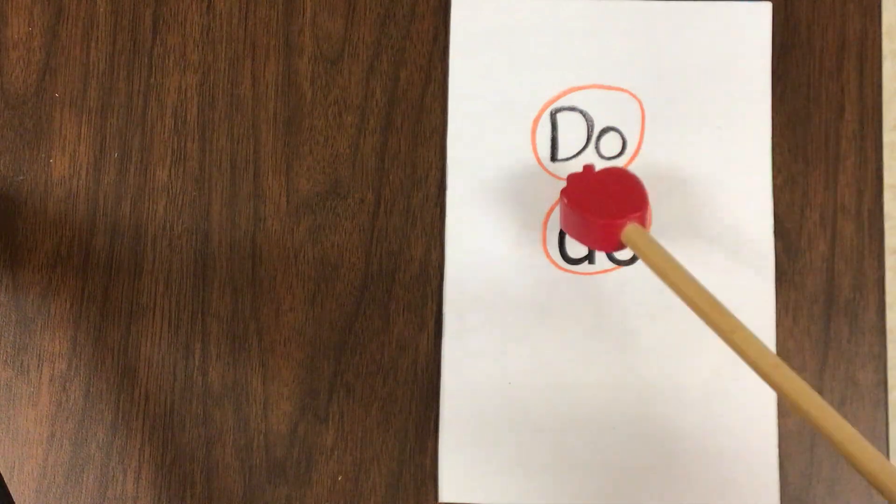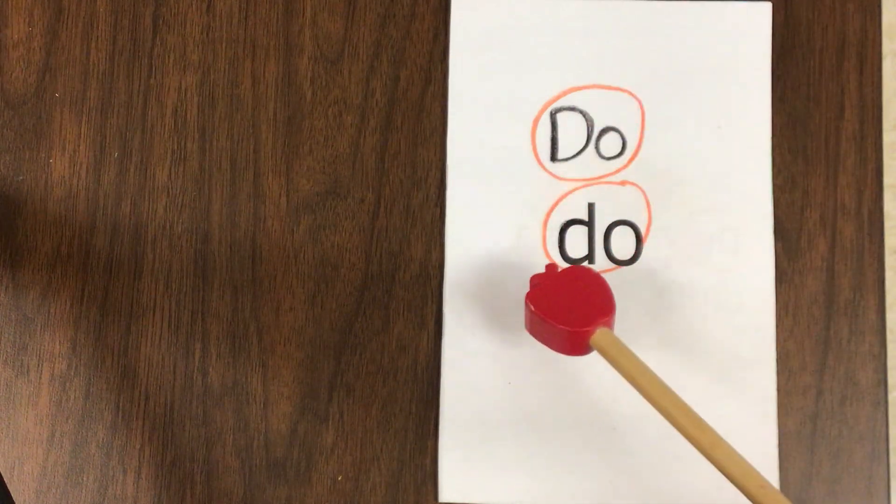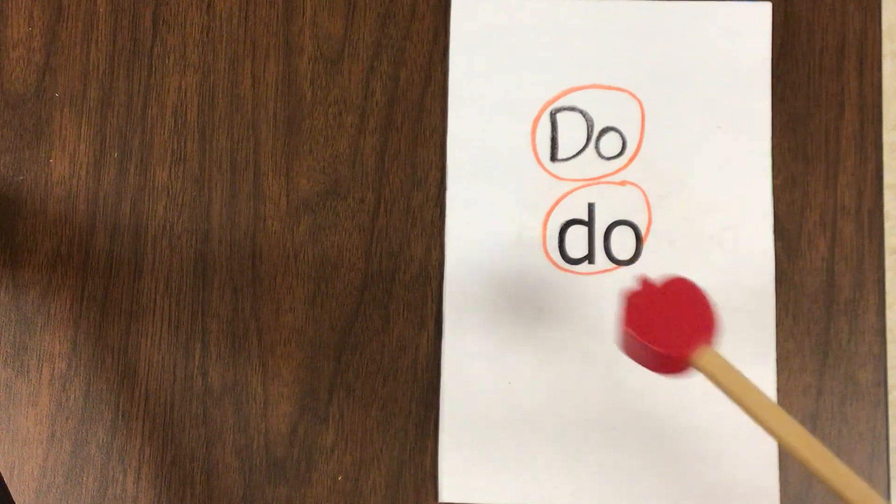OO, D, OO. You'll see that I wrote it with a capital letter, capital D-O, and a lowercase letter, lowercase D-O, because we'll see it both ways in our story.